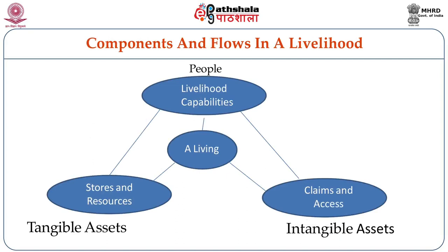Now we look at a figure showing the components of flows in livelihood. At the apex we consider people and their livelihood capabilities, who engage in livelihood for a living. They have tangible assets — stores and resources — and also intangible assets, which are claims and access, such as the availability of finance and a person's capacity to seek financial help or their attitude towards particular livelihood measures. Both tangible and intangible assets are pulled together and made use of in the best way to formulate a livelihood.